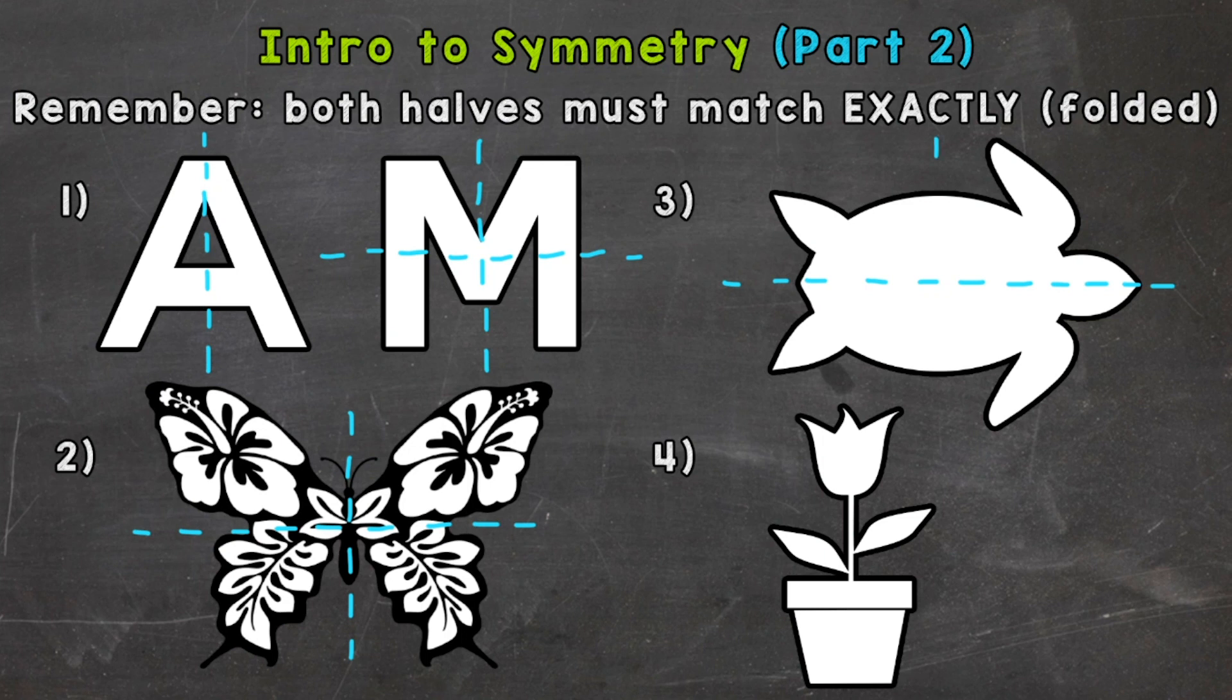As a counterexample here, if we were to try to find a line of symmetry here, the left and right half would not match. So the sea turtle only has one line of symmetry, and that's that horizontal line there.